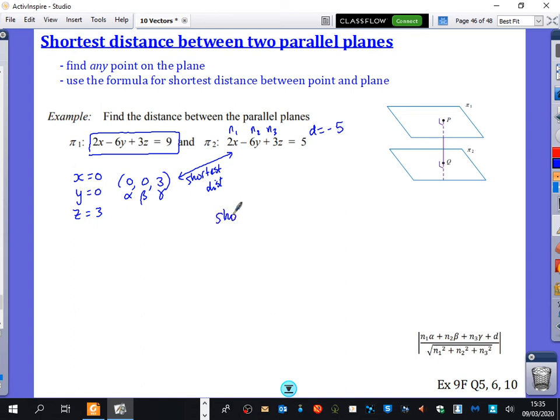So the shortest distance, sometimes I write out shortest distance just because I don't really like to use the letter d again when I've already used it, is... I haven't got the formula. Oh, I've got it written down here, actually. So it's n1 times alpha. Well, that's just 0. n2 times beta, which is just 0. I've got n3 times gamma, which is just 3 times 3. And then I add on d, which is minus 5. And I divide it by the modulus of the n vector, which is 2 squared, 6 squared, and 3 squared. So I get 4 over root 49, or 4 over 7. And that's it. The shortest distance between those two planes is 4 over 7.